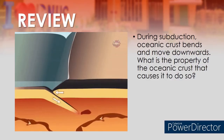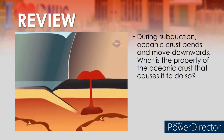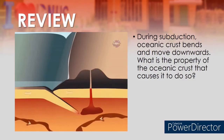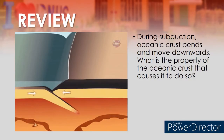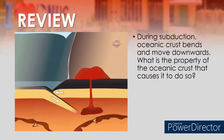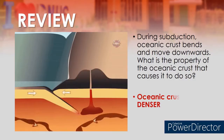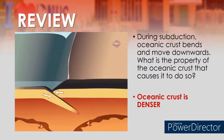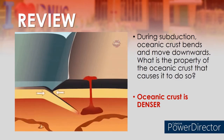Question number two: During subduction, oceanic crust bends and moves downward. What is the property of the oceanic crust that causes it to do so? The answer is that oceanic crust is denser than continental crust, therefore oceanic crust moves downward.